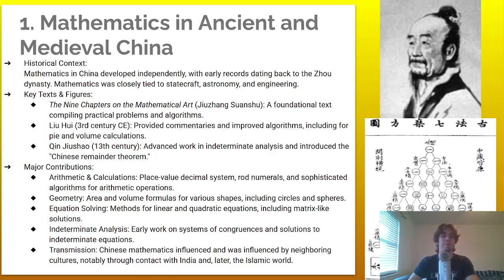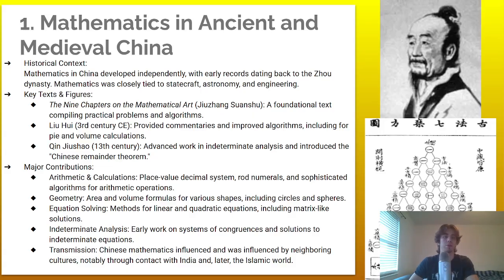To begin with mathematics in ancient and medieval China: mathematics in China was developed independently, with early records dating back to the Zhao Dynasty. Mathematics was closely tied to statecraft, astronomy, and engineering. A key text includes the Nine Chapters on the Mathematical Arts, a foundational text compiling practical problems and algorithms. A key individual includes Li Hu, who provided commentaries and improved algorithms, including for pi and volume calculations.